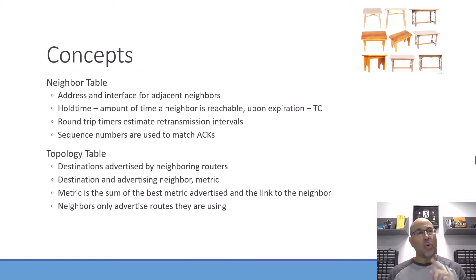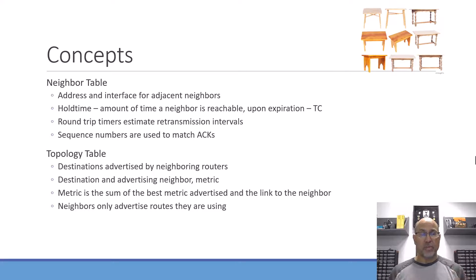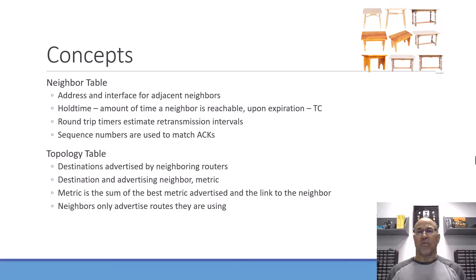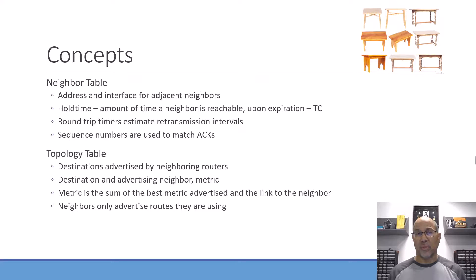When routers are exchanging information or aware of each other, that information is held with timers. When timers expire, routers have to figure something out. There are sequence numbers associated with messaging tied to acknowledgments from neighbors. A topology table helps wade through all advertisements — what are the values, the metrics, and which is the best pathway. The metric is not just hop count; it's a calculation that tells you about the quality of the pathway to a destination.